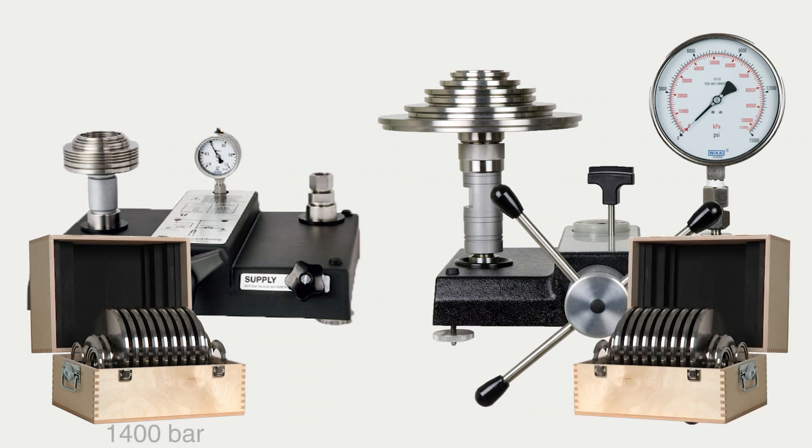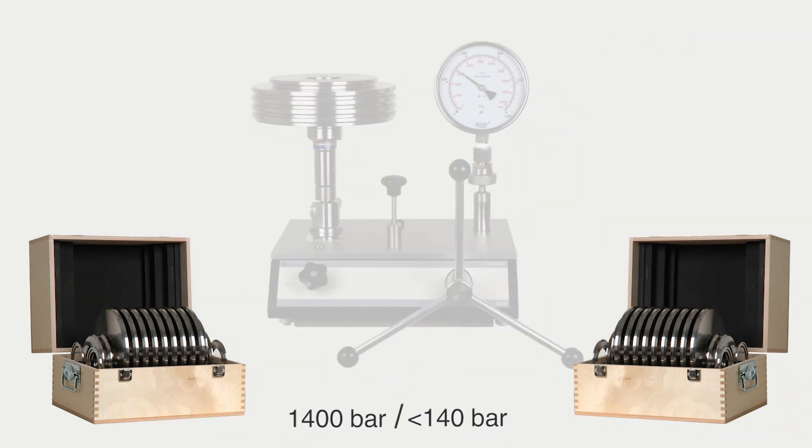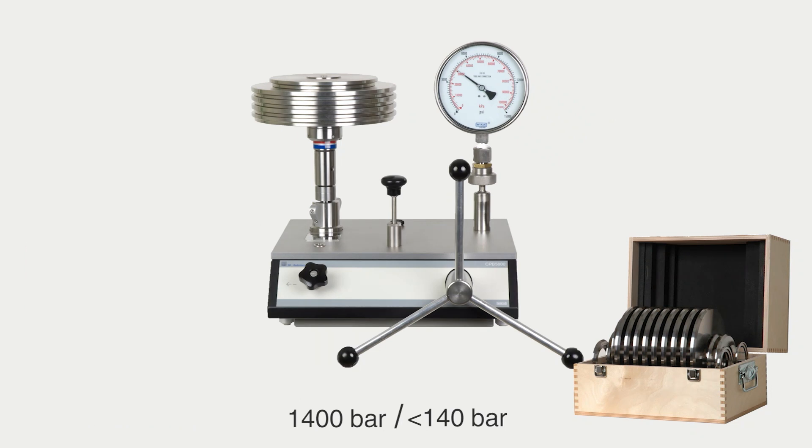One with a full-scale range of 1400 bar and one with a full-scale range below 140 bar. The DH-Budenberg dual-range piston-cylinder system combines two ranges within one instrument utilizing only one set of weights. This provides a wide operating range that would otherwise only be possible with two separate systems.